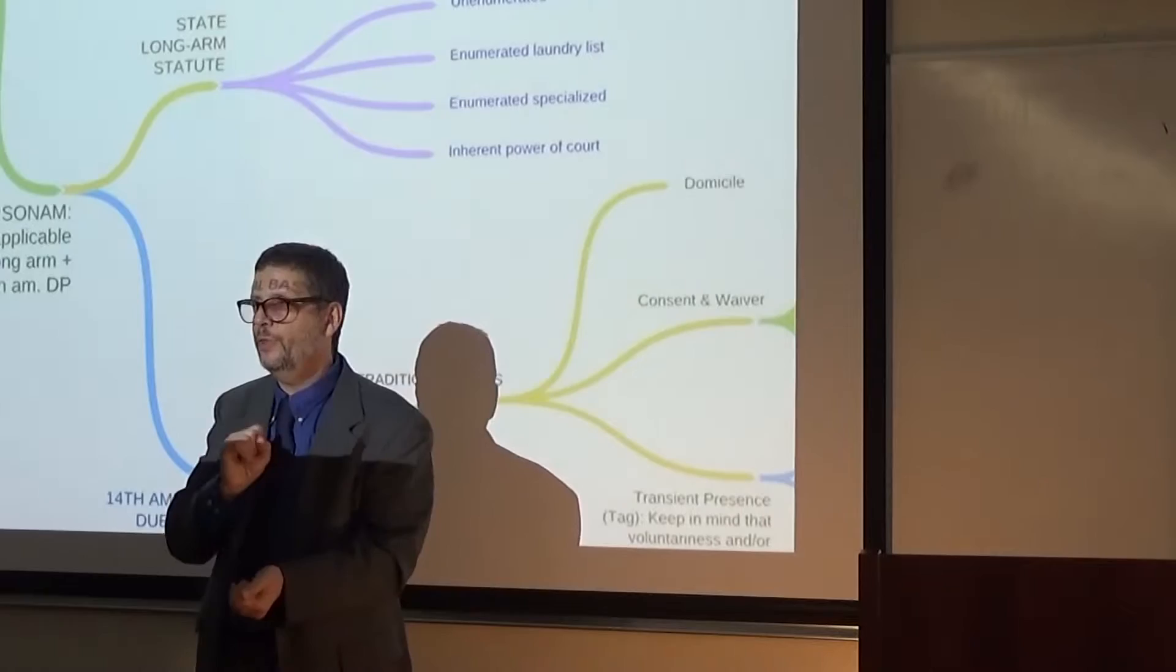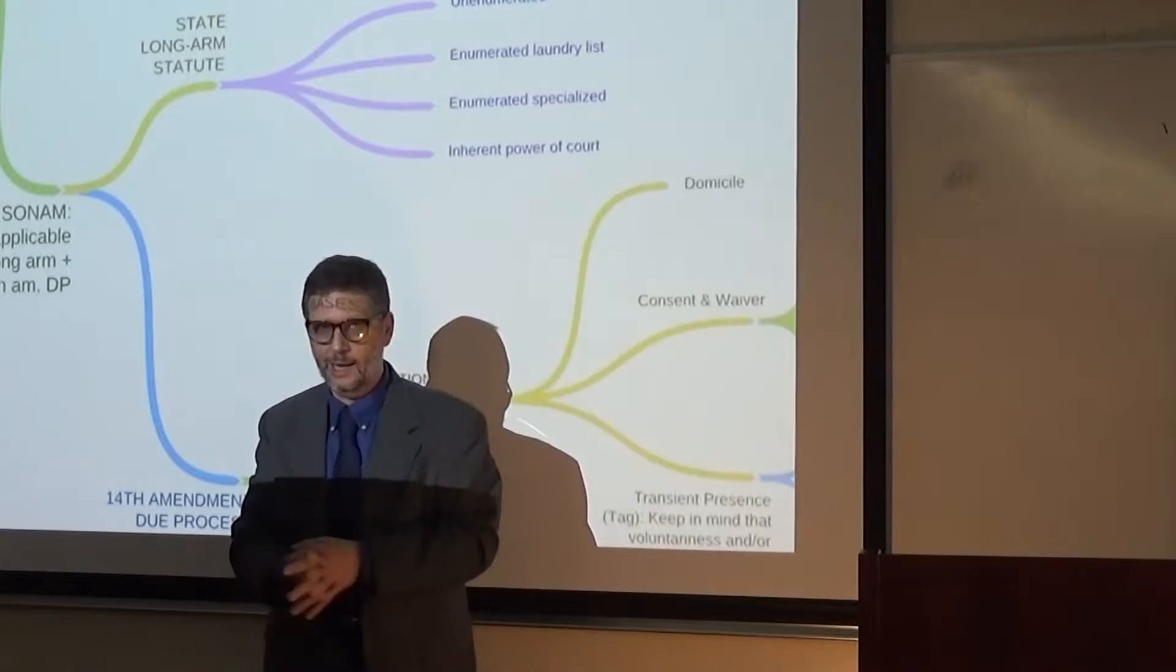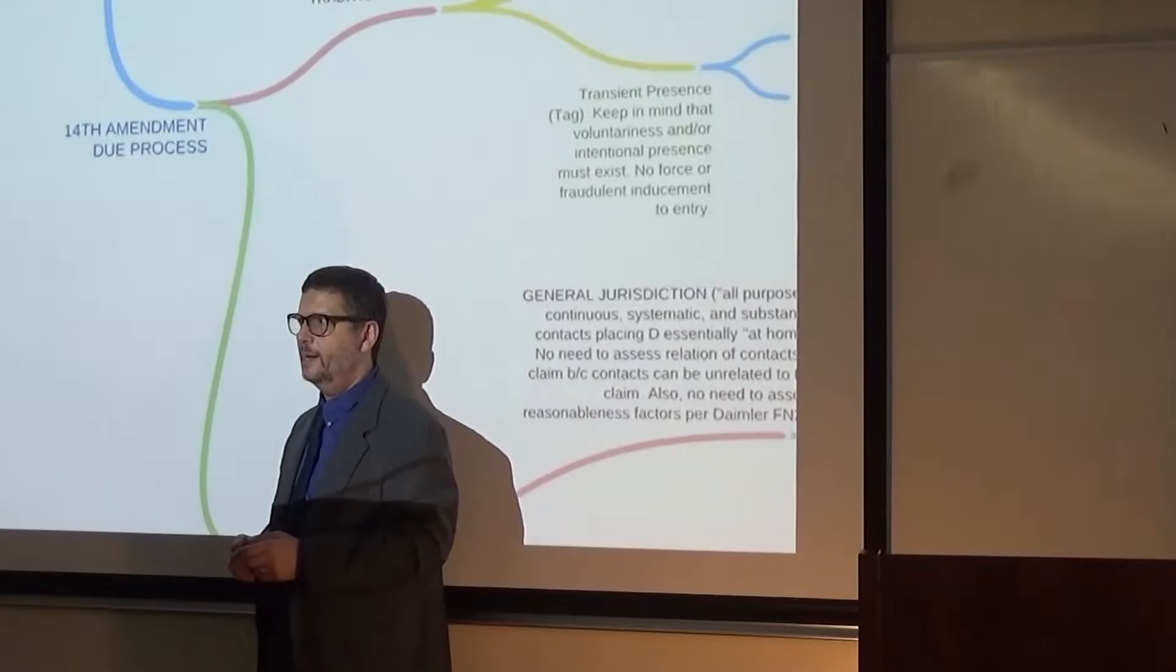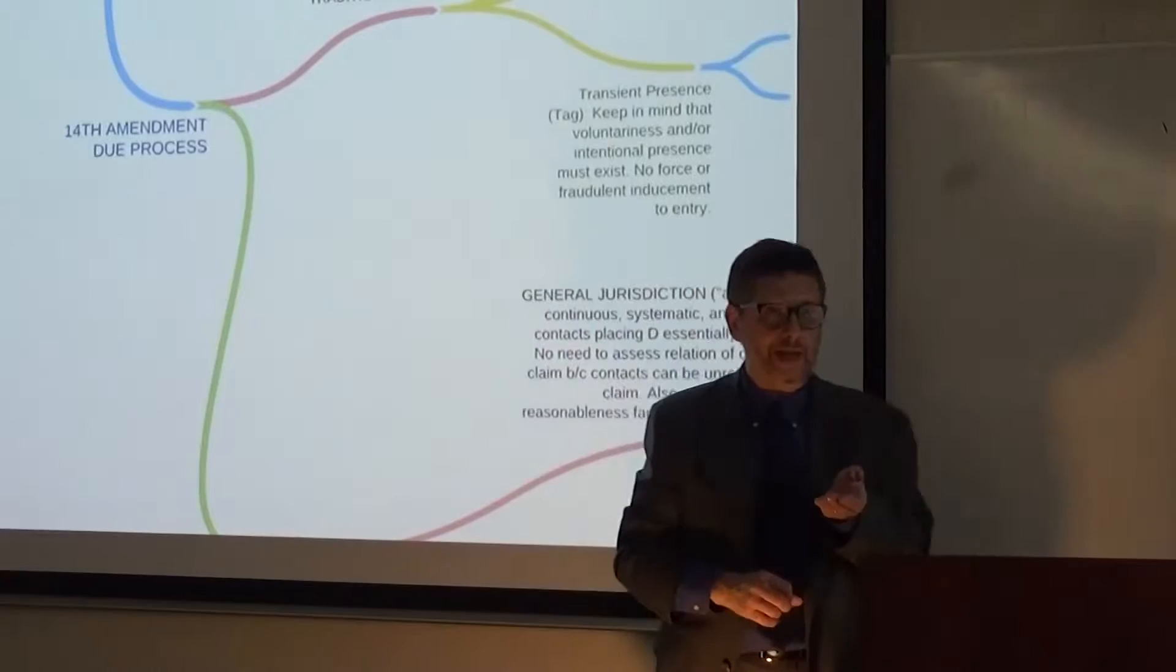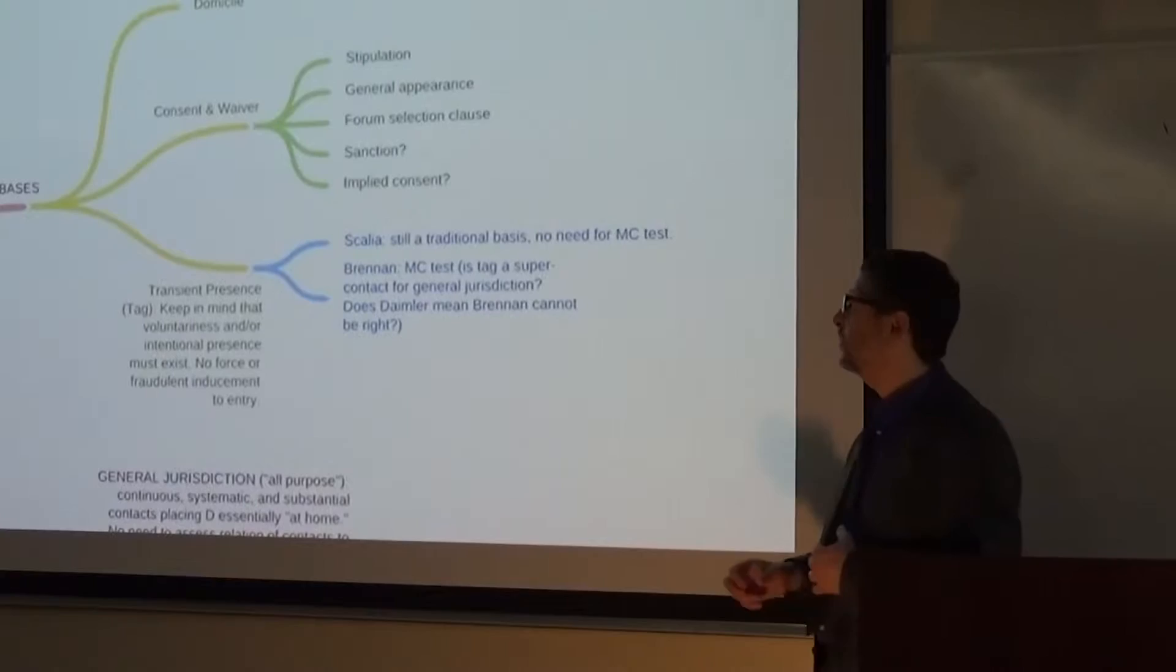Some are unenumerated. They'll say something like, P.J. is okay to the full breadth authorized by the due process clause of the Constitution of the United States. In which case, the constitutional analysis and long arm statute analysis kind of collapse into one analysis. However, some of them are enumerated. They'll specify a laundry list of bases for personal jurisdiction. Then you're going to have to sink your teeth into the long arm and start thinking of arguments you can make one way or another. My guess is that you're probably not going to see that.